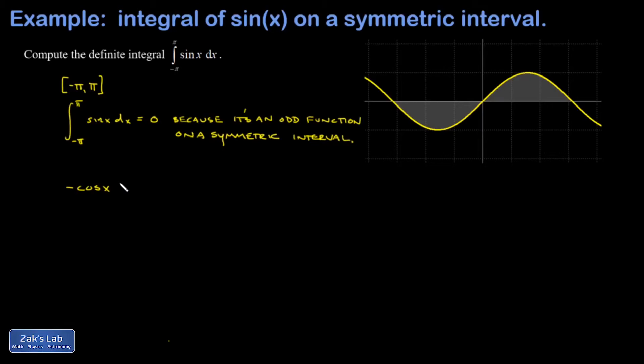The antiderivative of sine is negative cosine, because when I differentiate cosine, it gives me negative sine. And I'm going to evaluate that from negative pi to pi.